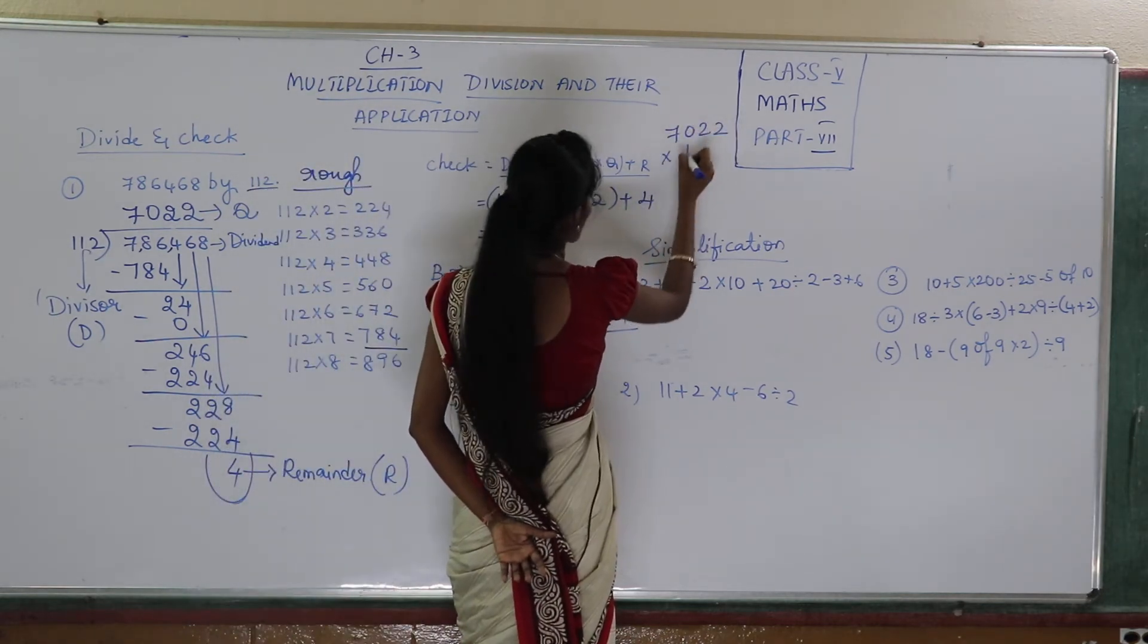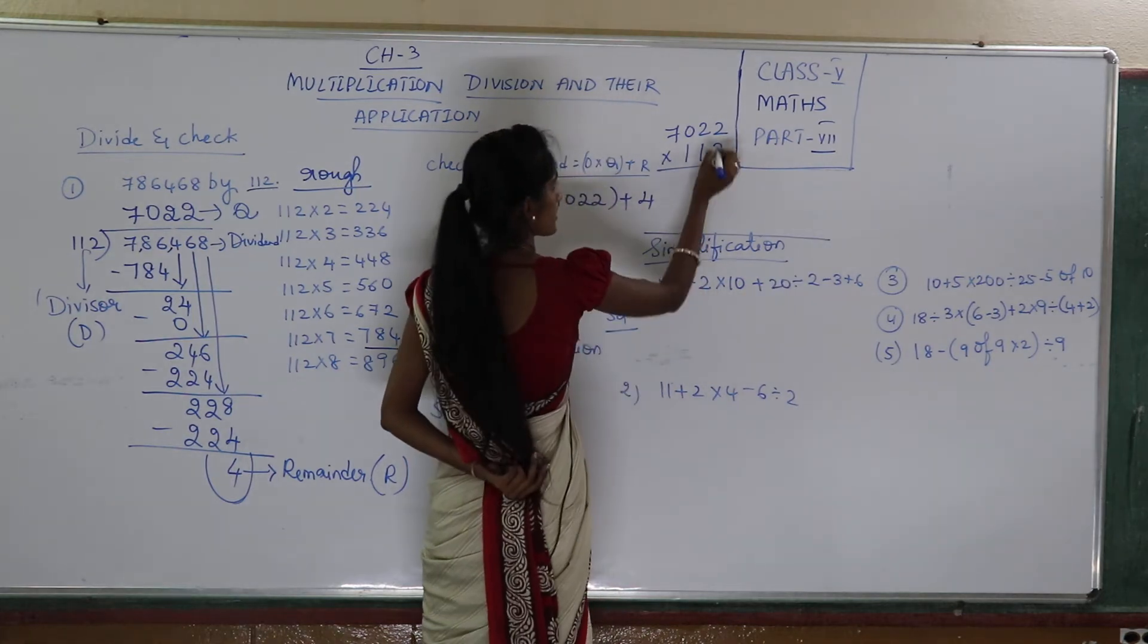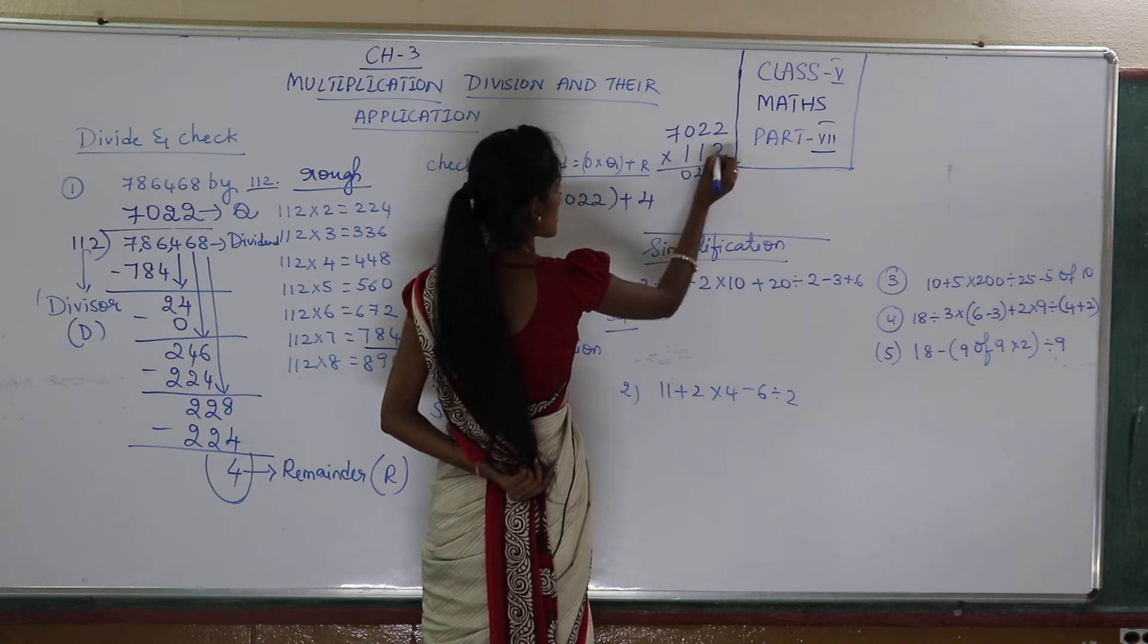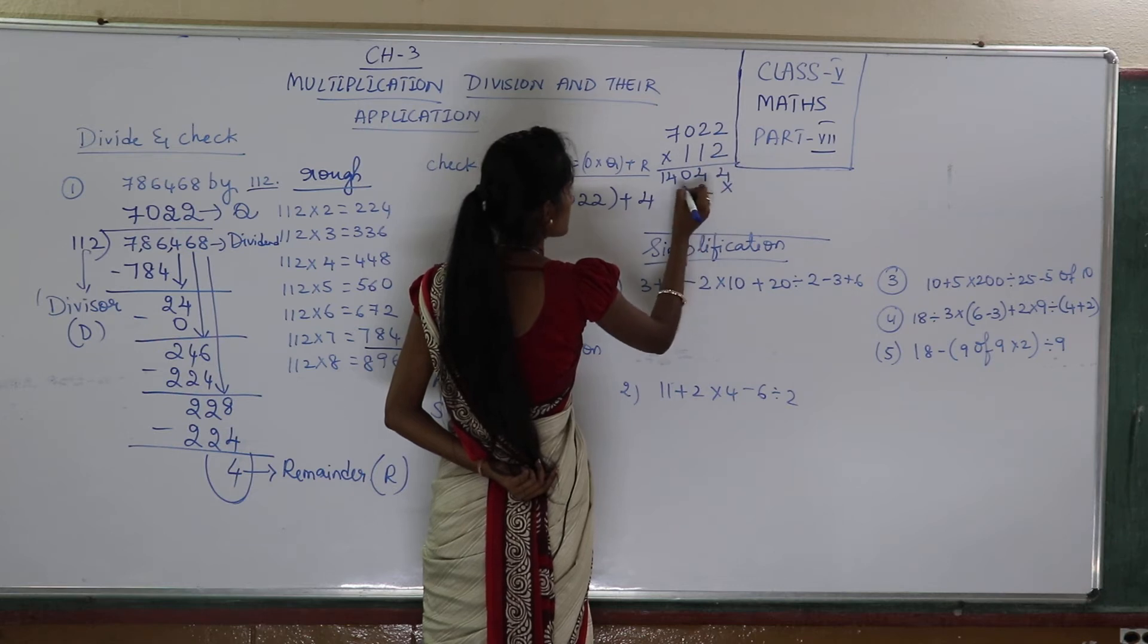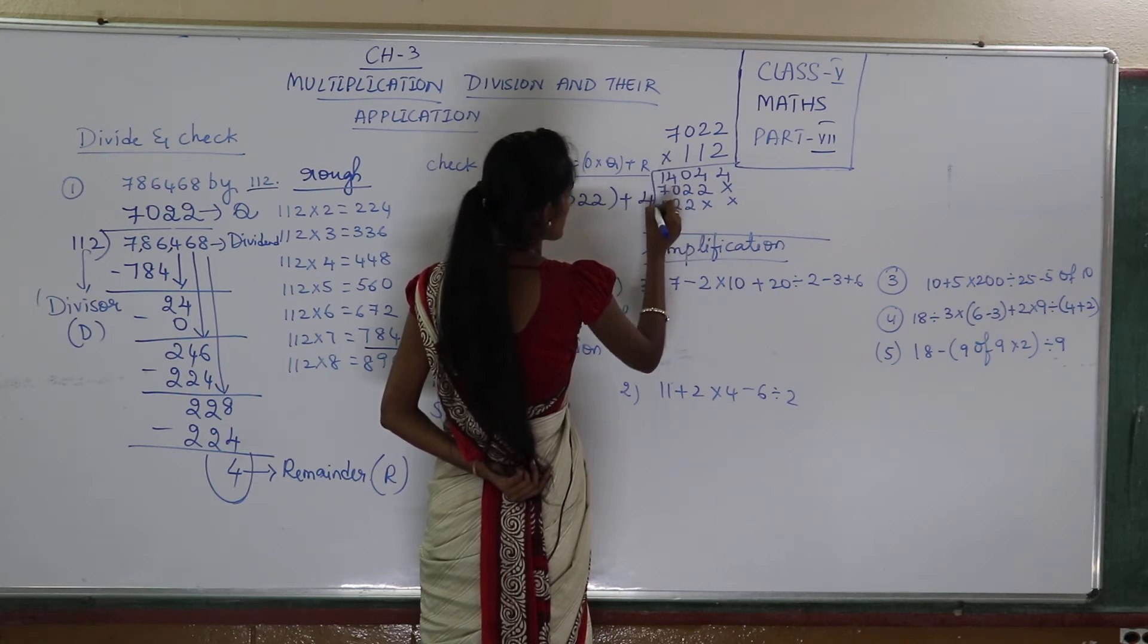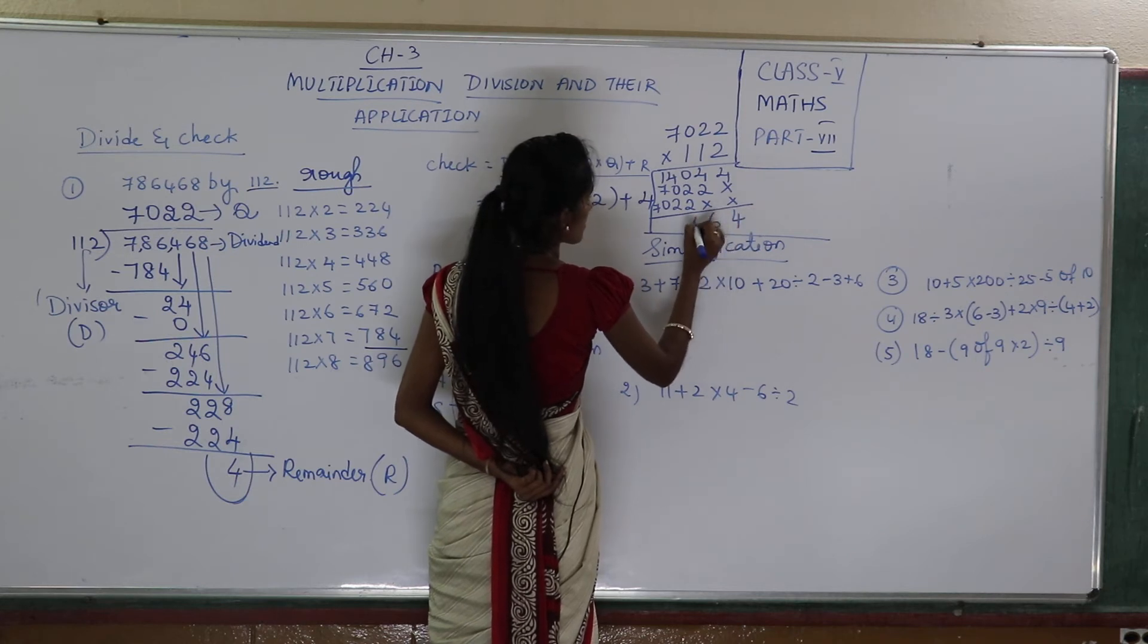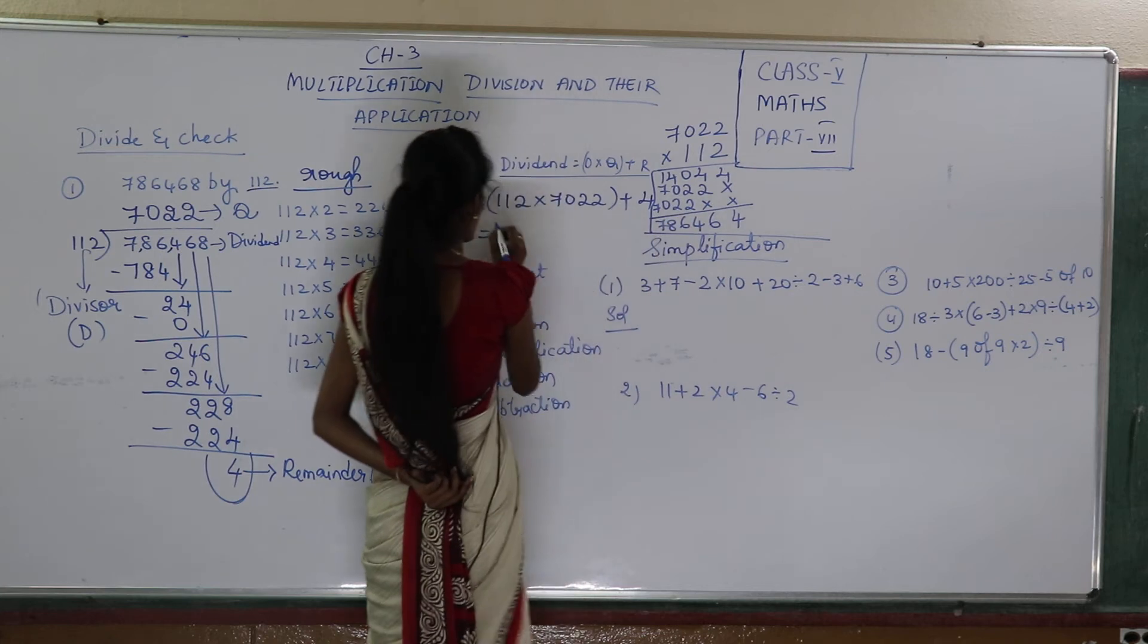7022 when I multiply with 112. Now check to me. 2 twos are 4. 2 twos are 4. 2 zeros are 0. 2 sevens are 14. 1 two is 2. 2, 0, 7. 2, 2, 0, 7. Now my addition. 4, 6, 4, 6, 8, 7. So I got this.